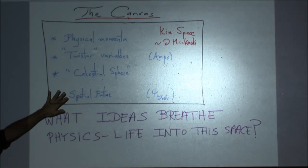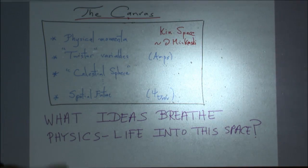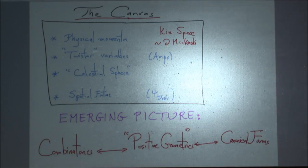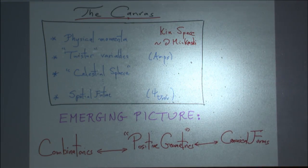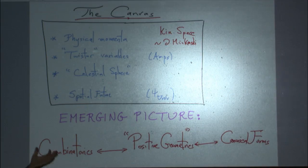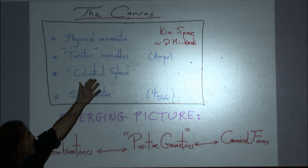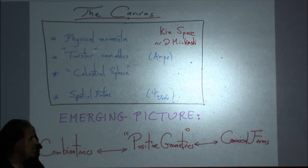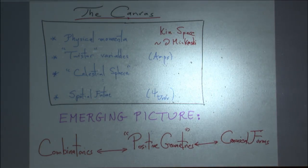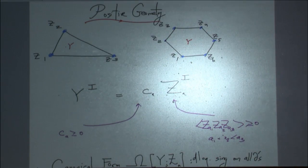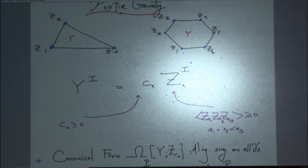But you have to ask: what question do you ask in this space? What ideas breathe physics life into what otherwise seems like an arid and boring place with no notion of time and no notion of locality? Unlike in ADS, I can't just say 'put a quantum field theory there.' There's nothing obvious to do on this space. But the picture that's been emerging over the last ten years is that there is something here after all — and the something is a little alien. It involves fundamentally combinatorial ideas: something called positive geometries that you can actually see in this kinematical space.